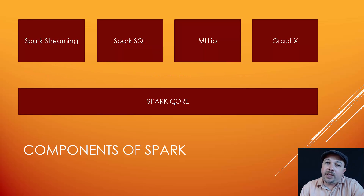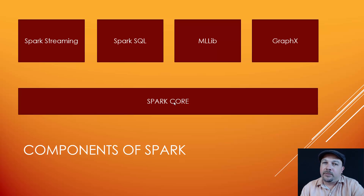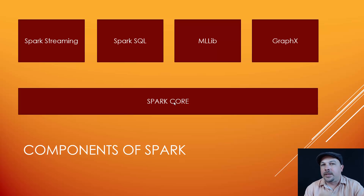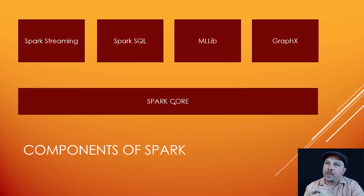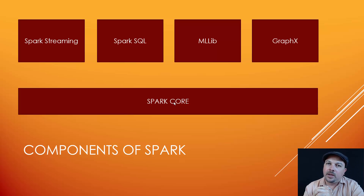Spark itself consists of many components. Spark Core deals with the basics of working with RDDs — transforming them, collecting their results, tallying them, and reducing things together. But there are also some libraries built on top of Spark to make more complex operations even simpler.